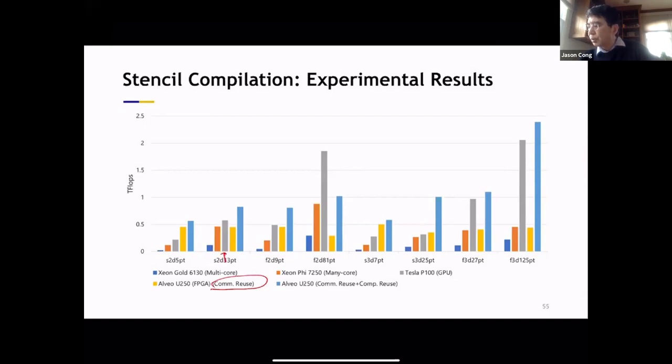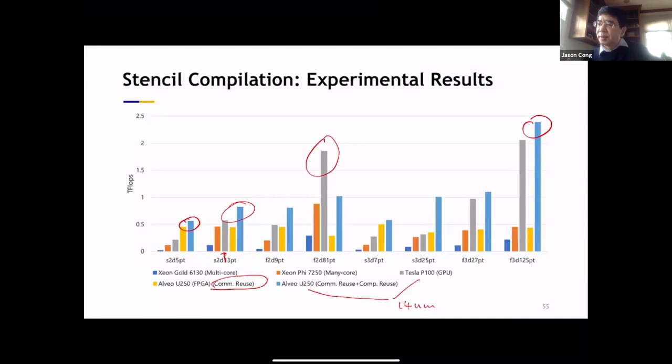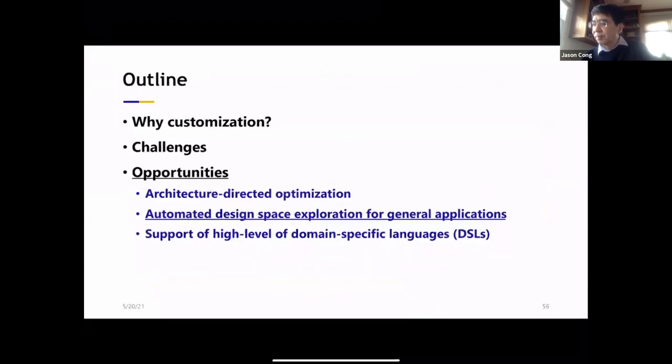And I'm just showing you a very small stencil. You can think about a much bigger stencil pattern. You can actually have a lot of reuse opportunities. So in that case, we can also implement efficiently on FPGA with customization. So this is some comparisons we have. And so the last two bars are what we have. For example, with computation reuse and without computation reuse. And this middle bar is the GPUs, Tesla P100. The reason we pick these two FPGA and the GPUs, they all are 14 nanometer process. So we want to compare the FPGA and the GPUs at the same technology node.